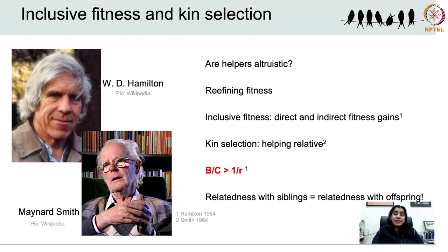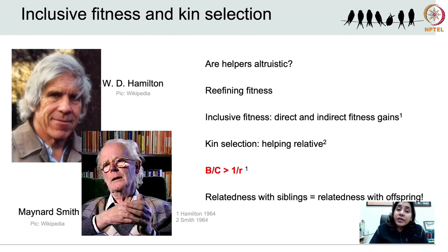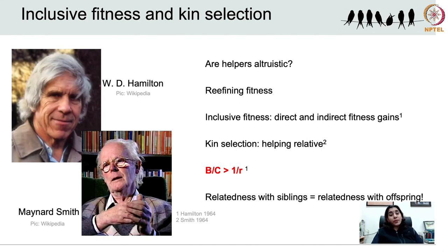Since birds are diploid sexually reproducing animals, their relatedness to their siblings is the same as their relatedness with their own parents and offspring, which is 0.5 — they share about 50% of their genes with siblings, parents, and offspring on average. I will leave you with a question to think about: if the average relatedness of a diploid individual to its sibling is no different from that with its own offspring, then why is parental care far more common than sibling care? The pressing question is why helpers forego their own reproduction to care for the offspring of the breeders.